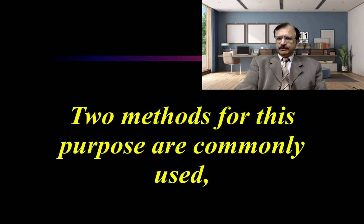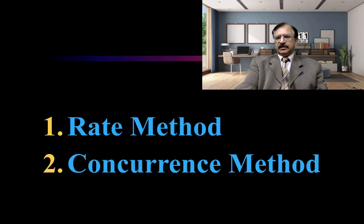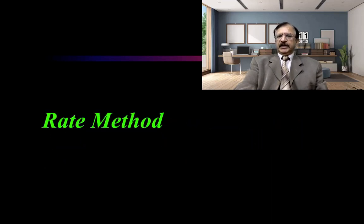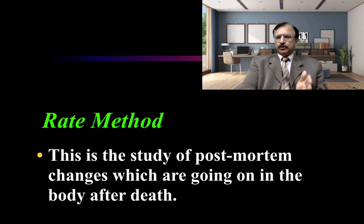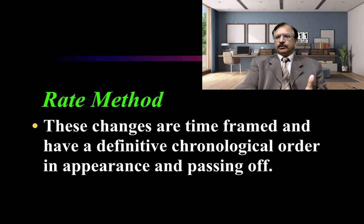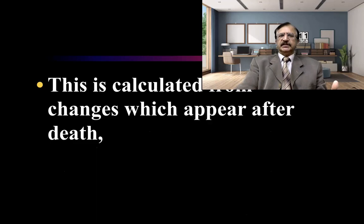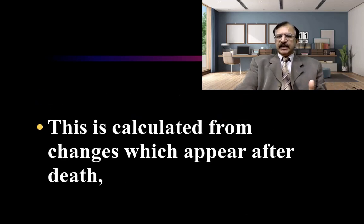The two methods commonly used are the rate method and the concurrence method. The rate method is the study of post-mortem changes which are going on in the body after death. These changes are time-framed and have a definitive chronological order in appearance and in passing off. By studying these changes — in which state they are — we can calculate the time since death, calculated from the changes which appear after death.